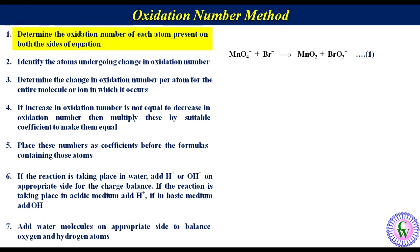Step number 1: Determine the oxidation number of each atom present on both sides of the equation. On the left side, the oxidation numbers of Mn, O, and Br are +7, −2, and −1 respectively. On the right side, the oxidation numbers of the same elements are +4, −2, and +5 respectively.